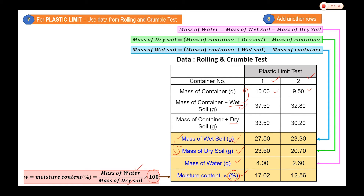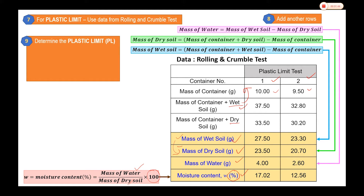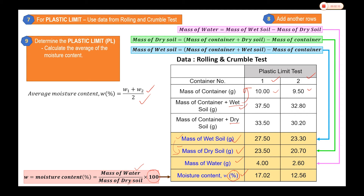Once we complete all the information based on the given data, the plastic limit is determined by taking the average of the moisture content values. In this case, we have two moisture contents: w1 and w2 divided by 2. If you have three or four data points, you include w3 and w4 in the average accordingly.